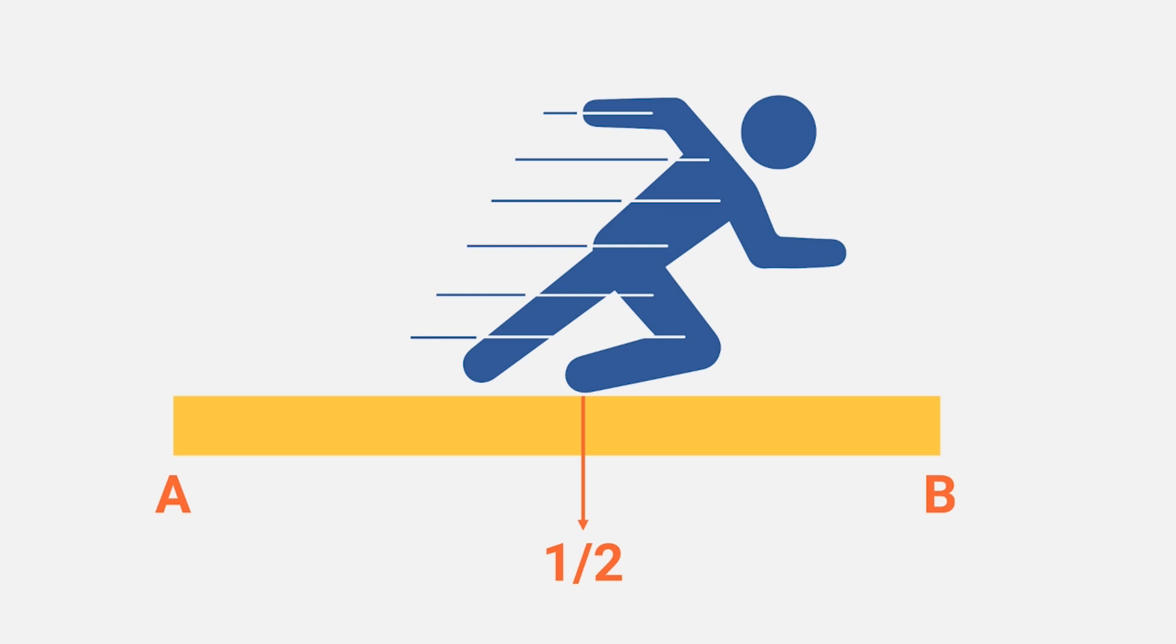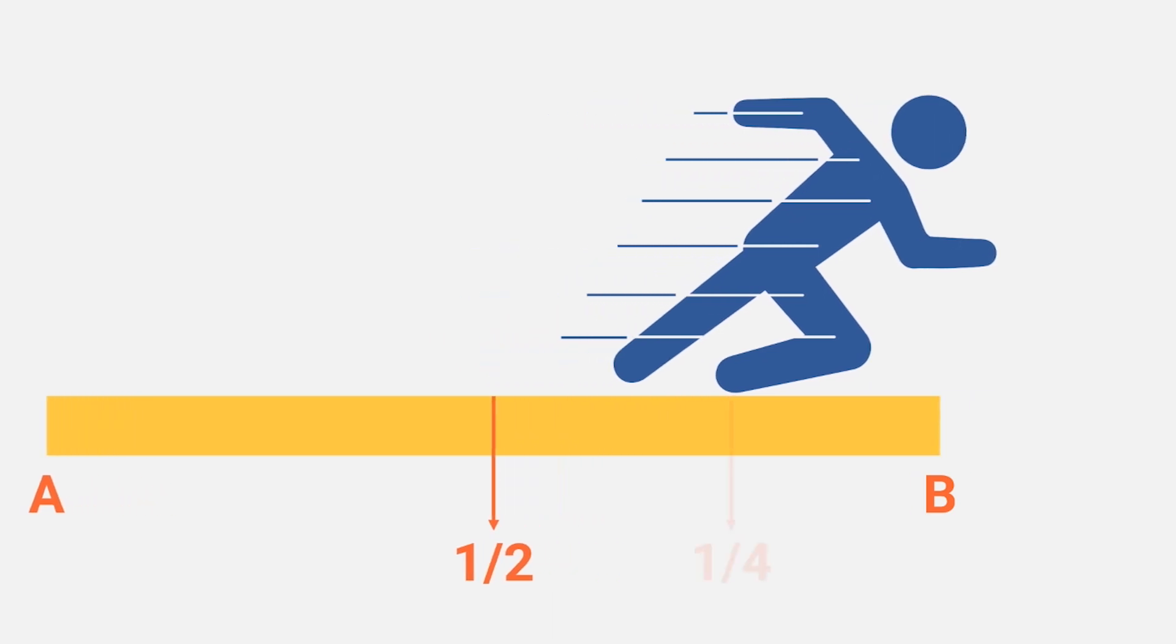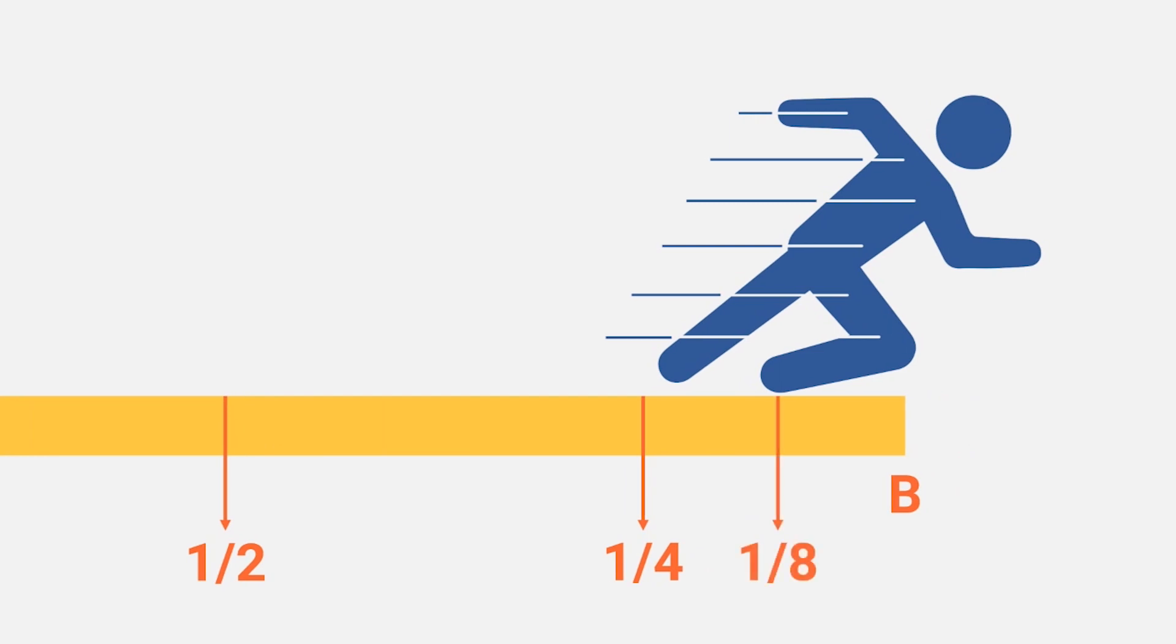Speaking of halfway points, since there is a halfway point between points A and B, there must also be a halfway point between the halfway point and point B, right? Since before the runner reaches point B, he must first reach this second halfway point as well. And between this second halfway point and point B, there is a third halfway point that must be reached first.